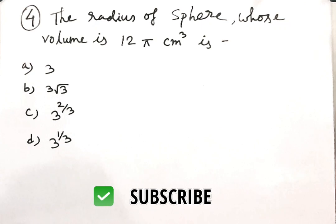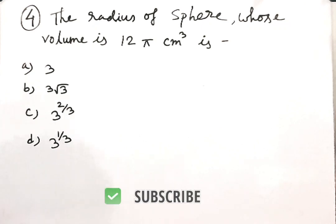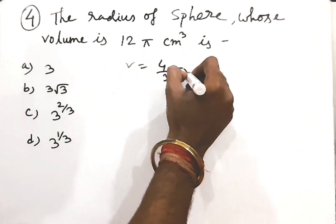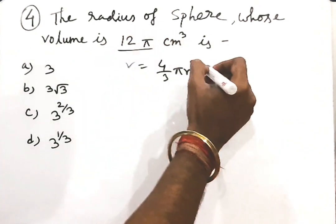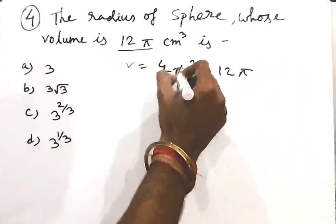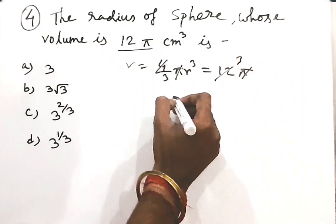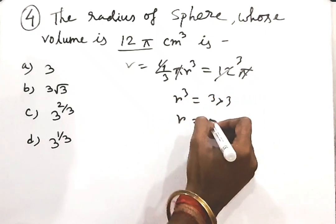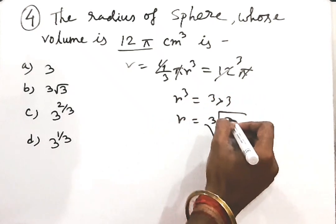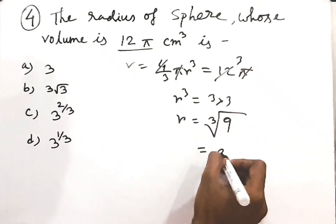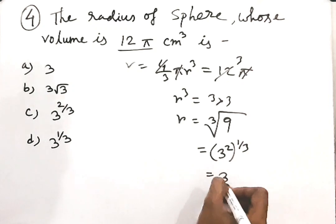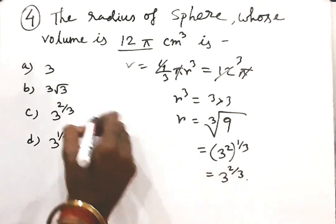Now the question is: the radius of a sphere whose volume is 12π cubic centimetres. Volume equals (4/3)πr³ equals 12π. Cancelling π and dividing: r³ equals 9, so r equals cube root of 9, which equals 3 to the power 2/3. That is the answer.